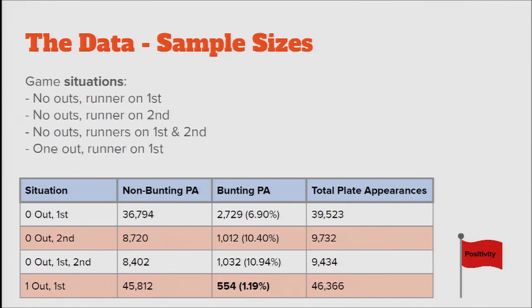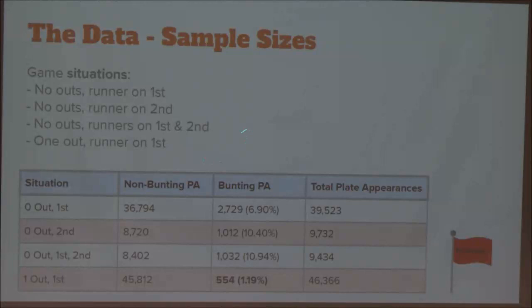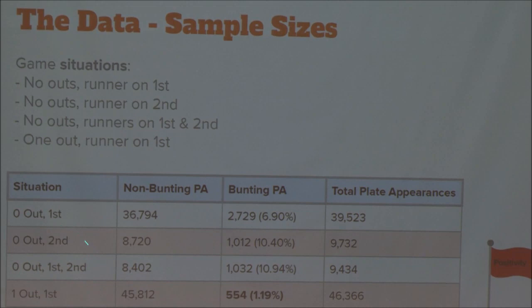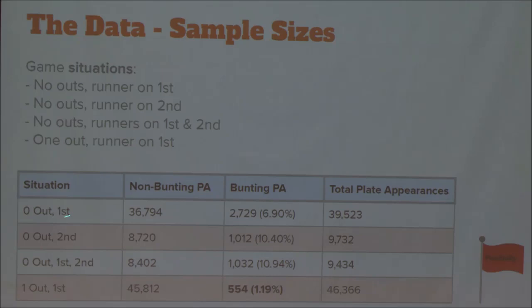We're going to look at these specific game situations: no outs runner on first, no outs runner on second, no outs runner on first and second, and one out runner on first. We split them out because they're very different scenarios. The number of bunts varies quite a lot — no outs runner on second, or no outs runner on first and second, sees a bunt about 10% of the time. Runner on first with no outs is about 7%. Runner on first with one out is only about 1%. At JSM we went to a game the day after the sports talk, and the Dodgers bunted with a runner on first and one out — it was so exciting, it basically never happens.